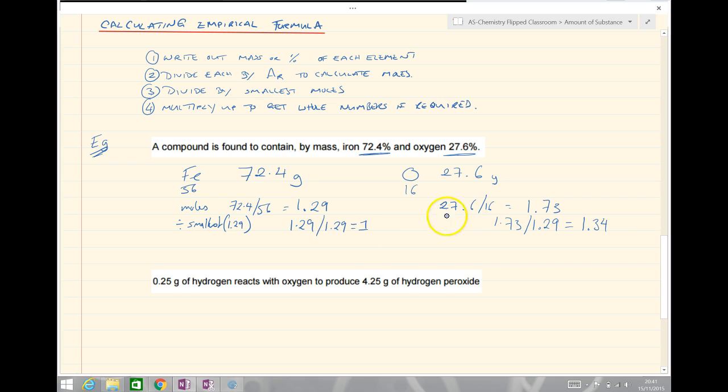If we look at this ratio, we've got 1 to 1 and a third. But remember, we're looking for the whole number ratio. If we've got a third, to get up to a whole number, we're going to multiply both of these values up. We multiply by 3 to get a whole number ratio. So, we have 3 irons to 4 oxygens and our empirical formula becomes Fe3O4. Straightforward.